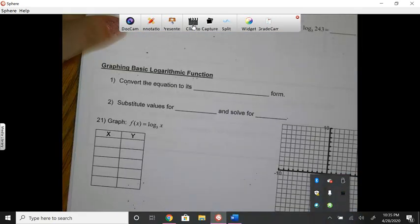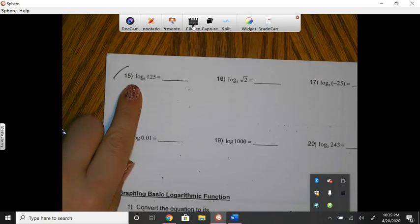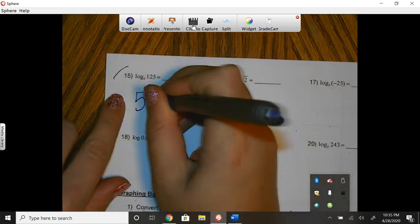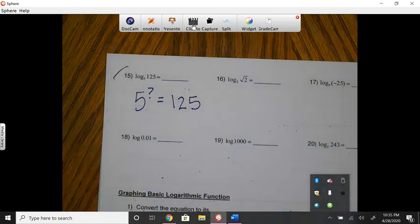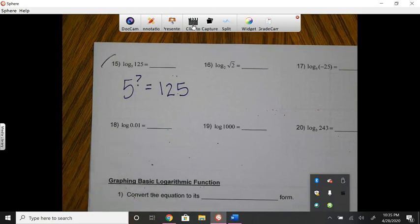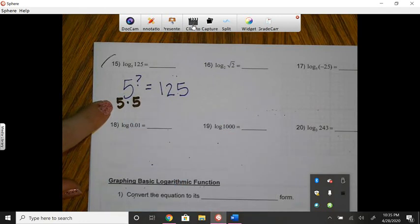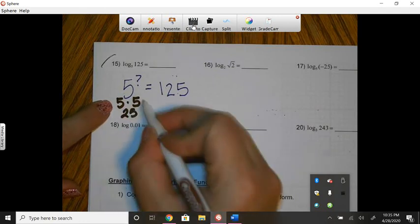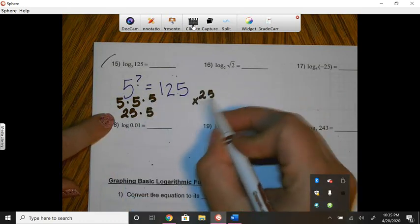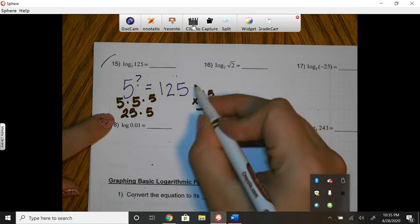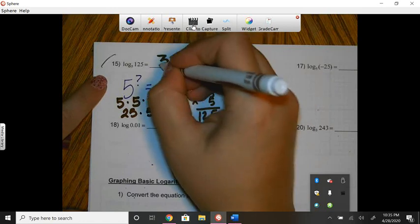Let's go ahead and try another one. Number 15. So this is saying 5 to what power is 125? 5 to what power is 125? So again, if we try without a calculator, 5 times 5 is 25. And then if we multiply another 5, 25 times 5 would make 125. So you would need 3 of them. So the answer to number 15 is 3.